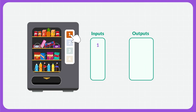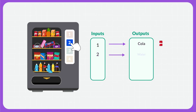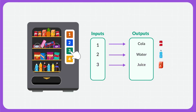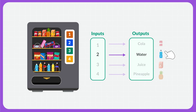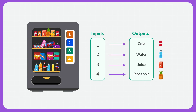Let's say I press the first button and out pops a can of cola. Someone else comes up and presses the second button and gets a water bottle. The third button is pressed and a juice box comes out. And then another person presses the fourth button and they get a pineapple. We can see that when each button is pressed, exactly one type of item comes out. So each input has exactly one output. This is what it means to be a function.